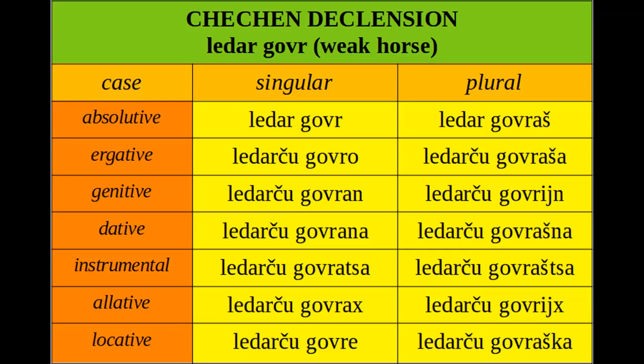You can also see that in the plural, the -sh that marks the plural disappears in a few cases. You have ledar goer in the absolutive plural, ledar goer in the ergative, but in the genitive plural we have ledar to goerin. In the allative case — the case for going to a place — we have ledar to goer. So there are many strange phenomena, and there are still three more cases I haven't shown.